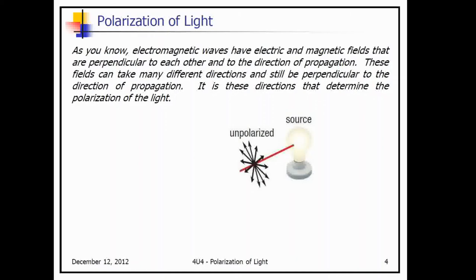To understand the principles behind polarized lenses and the splitting of a ray of light by calcite crystals, you first need to grasp the concept of polarization. Electromagnetic waves have electric and magnetic fields that are perpendicular to each other and to the direction of propagation. These fields can take many different directions and still be perpendicular to the direction of propagation — it is these directions that determine the polarization of light.